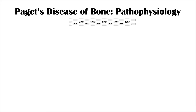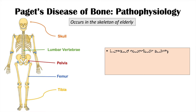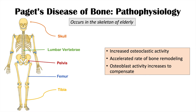Paget's disease of bone occurs in the aging skeleton of the elderly. The particular areas affected are the skull, the lumbar vertebrae, the pelvis, the femur, and the tibia. What we find is that there's increased osteoclastic activity and an accelerated rate of bone remodeling, and osteoblast activity increases to compensate for the increased osteoclastic activity.